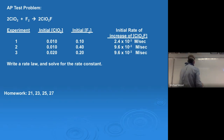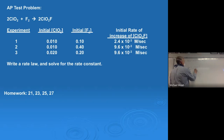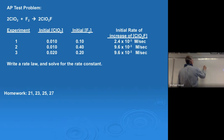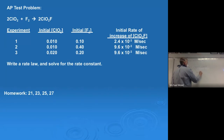So I'm trying to figure out the y value. I've got the rate for experiment two: 9.6 × 10⁻³ over 2.4 × 10⁻³, and that equals 0.40 over 0.10 to the y. I don't need to include ClO2 or k because those are eliminated. What I get is 4 equals 4 to the y, so y equals 1.